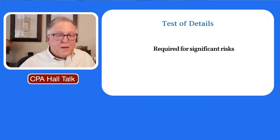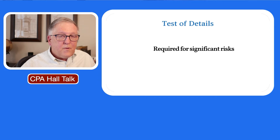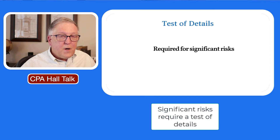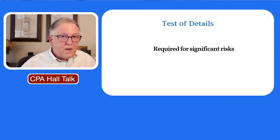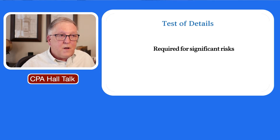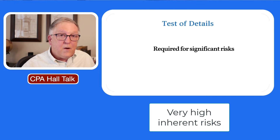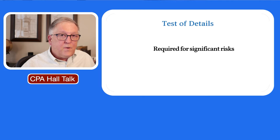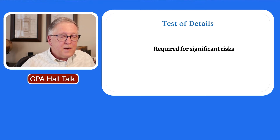When you think about test of details, understand that if you have any significant risk, those areas must be addressed with a test of details. Significant risk areas are usually places where you have extremely high inherent risk, such as a complex estimate. So if you have a significant risk, you must plan and perform a test of details procedure in relation to that risk.